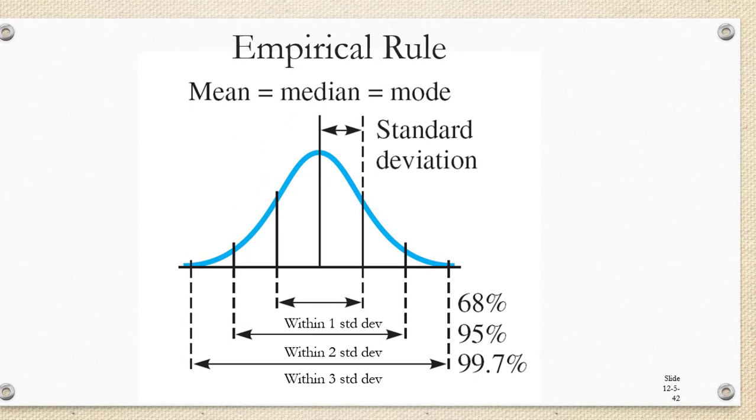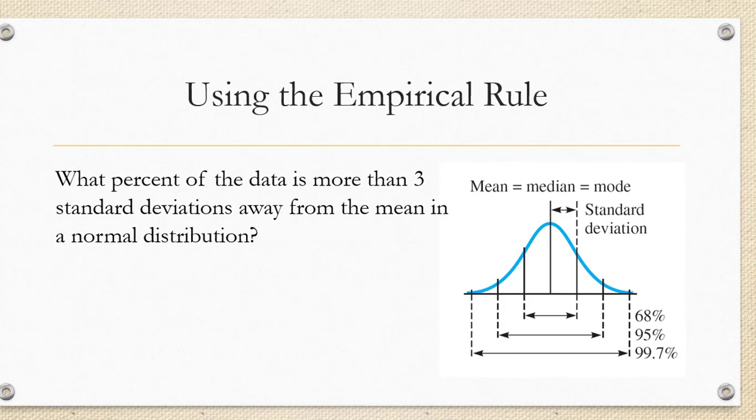We will refer to these three values as the empirical rule. Let's apply the empirical rule and determine what percent of the data in a normal distribution is more than three standard deviations away from the mean.